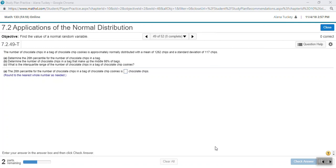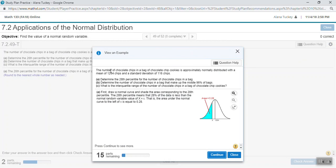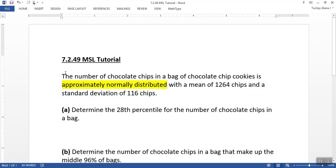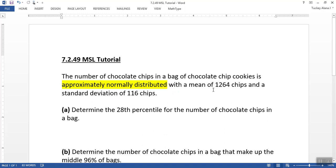Hello, Math 133 students. I received a question about this problem, which is 7.2.49 with a T after it, meaning they expect you to use technology like a calculator or computer to help you. I'm going to click on View an Example, and the font on this is so tiny that I'm going to copy and paste all of this into a Word document. The number of chocolate chips in a bag of chocolate chip cookies is approximately normally distributed, with a mean of 1264 chips and a standard deviation of 116 chips.